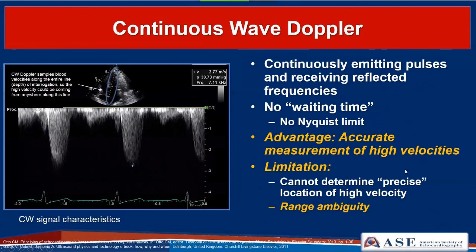With continuous wave Doppler, the transducer is continuously sending pulses and receiving reflected red blood cell frequency shifts. There is no wait time, so there is no Nyquist limit. The advantage is that it allows accurate measurement of high velocities. The limitation is range ambiguity—because we are constantly sending and receiving along the interrogation line, high velocities could come from anywhere in that path, so we cannot determine the precise location of the high velocity.